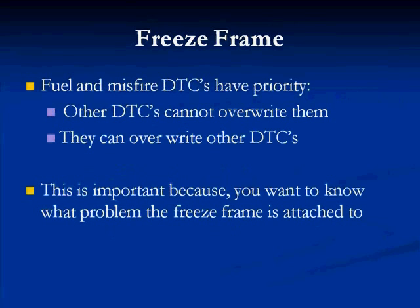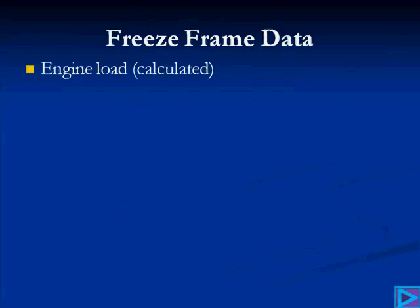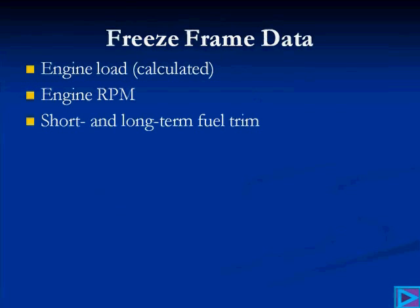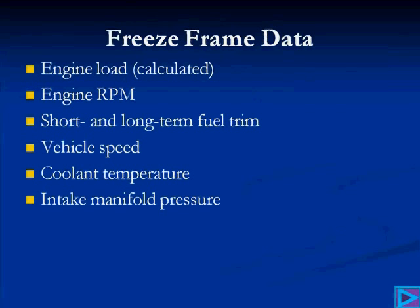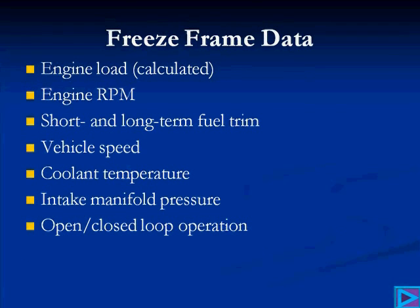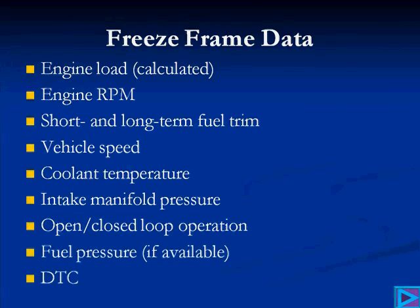This is important because you're going to want to know what problem the freeze frame is attached to. When we look inside the freeze frame, we're going to see engine load, engine RPM, short and long-term fuel trims, vehicle speed, coolant temperature sensor signal, inlet manifold pressure, open or closed loop status, fuel pressure if available, and the DTC — the J2012 DTC.